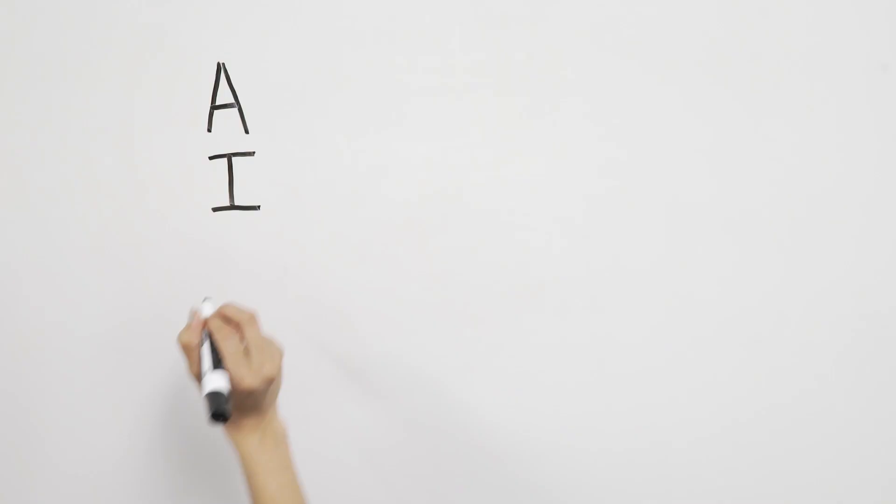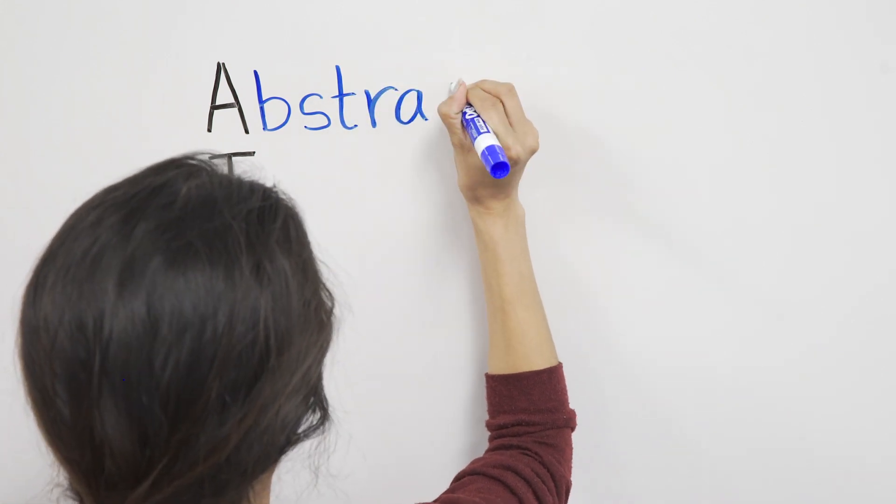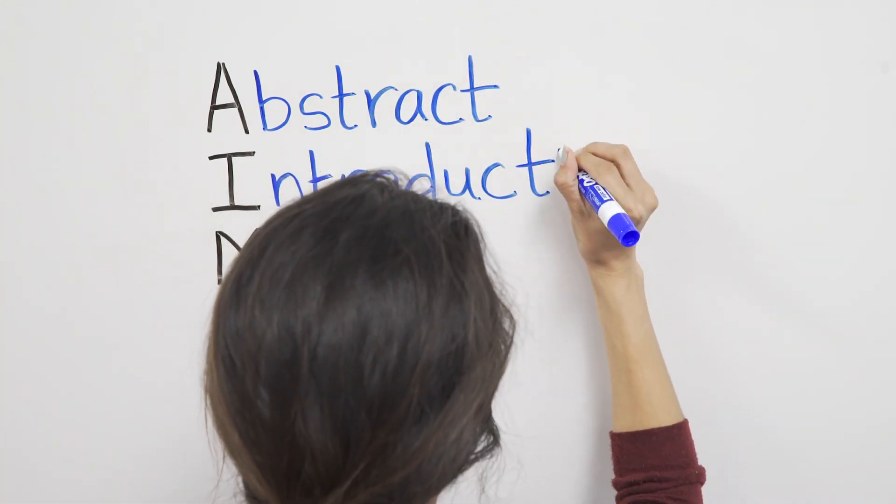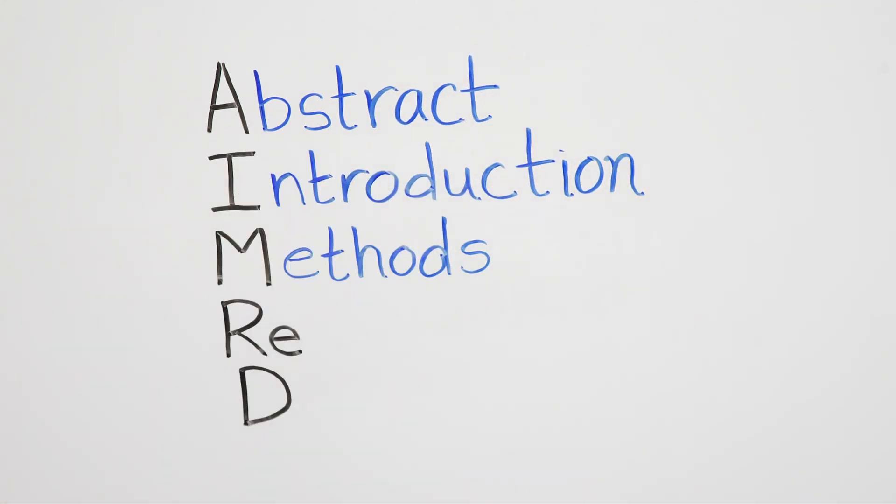Remember this acronym, AIM-RED. Like a five paragraph essay, each section has a different purpose. A stands for abstract, I is introduction, M methods, RE results, and D is discussion.